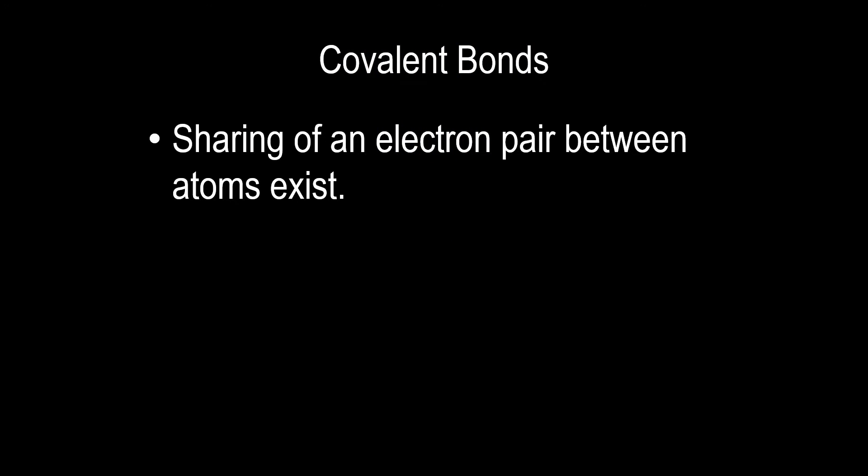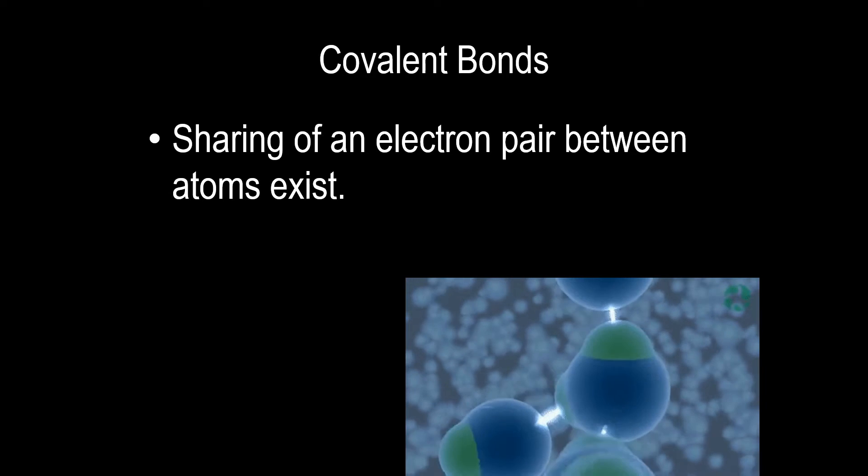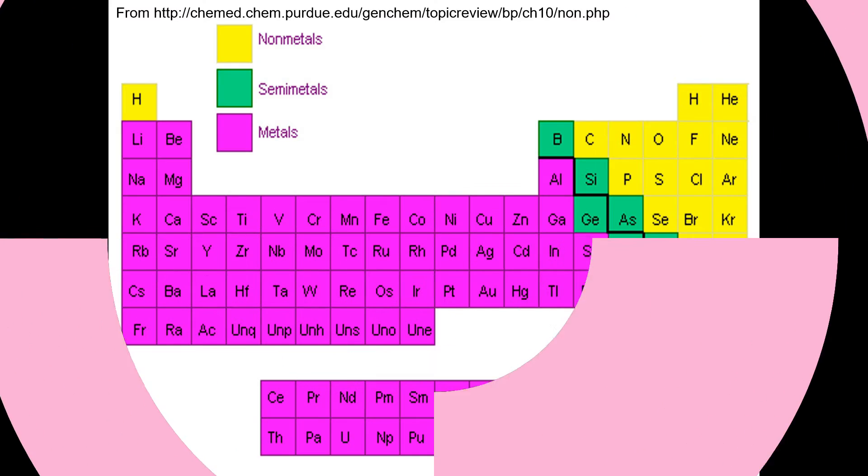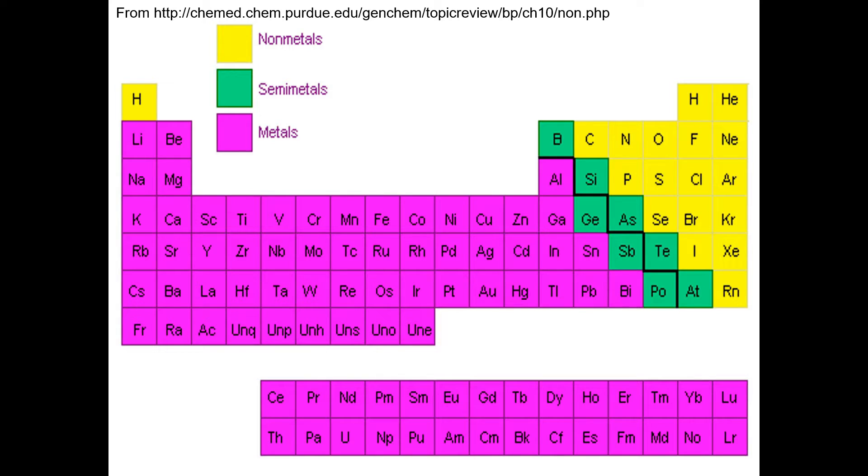Covalent bonds occur when sharing of an electron pair between atoms exist. As you see in the pic, they bond together sharing the electrons. This type of bonding occurs between non-metals. Now, what are non-metals? Looking at this periodic table gives you an idea which is which.